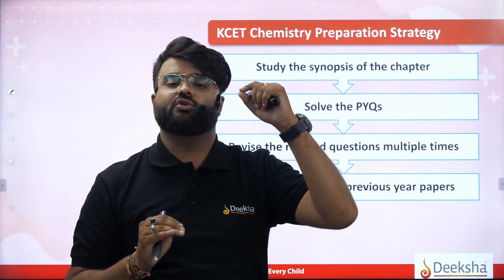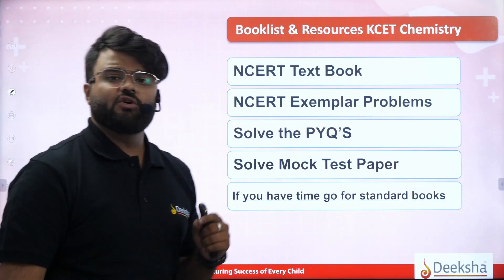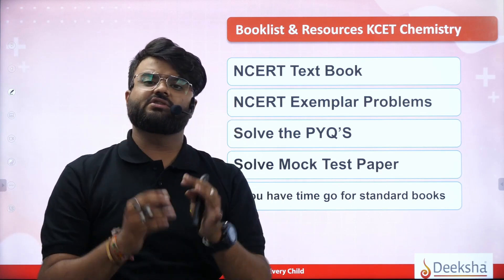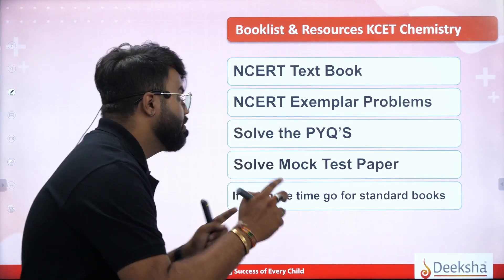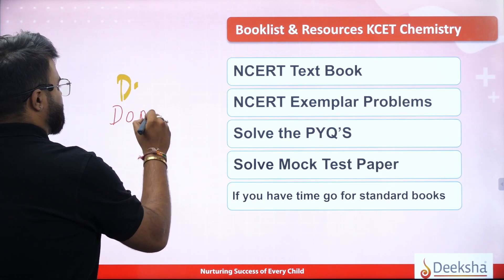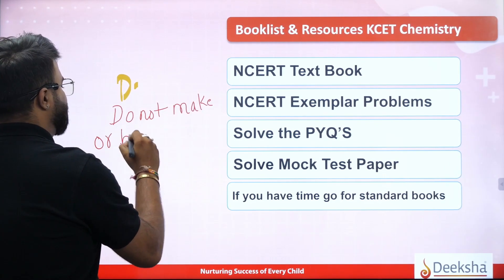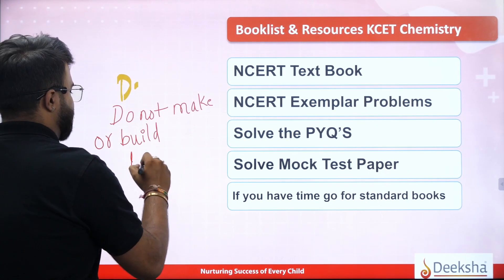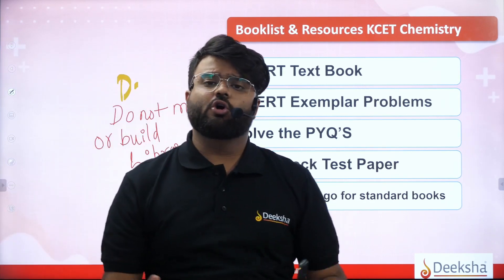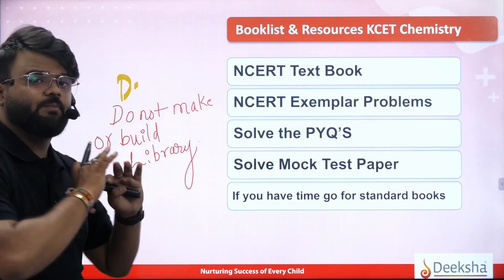I assure you — 50 plus marks are 100%. Booklist and resources of KCET chemistry: do not build a library. There are many books available, but do not make or build a library — that will confuse you a lot.